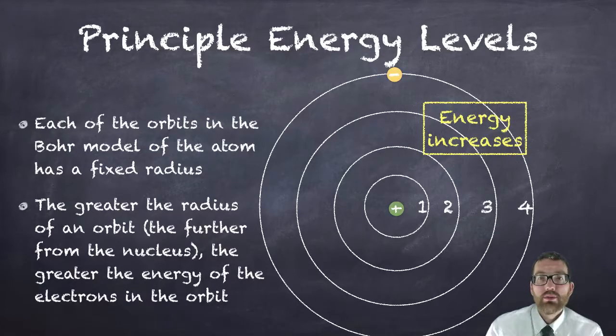If an electron absorbs energy it jumps to higher levels because it makes more sense that it has more energy in the fourth level. So if you're absorbing energy you go up to higher levels. That's what Bohr called a quantum leap in energy.